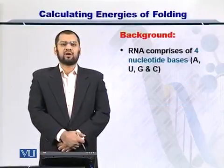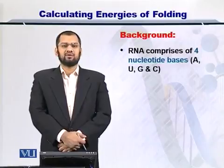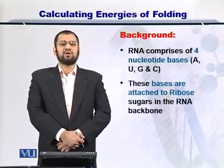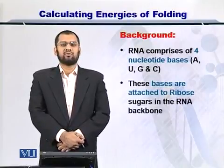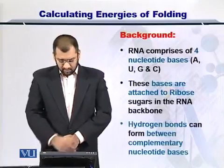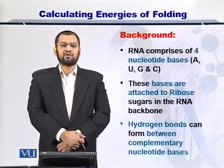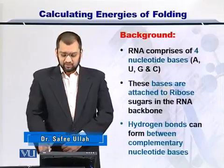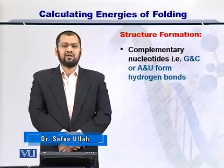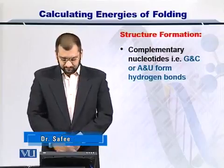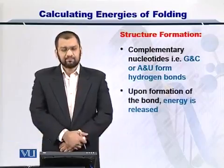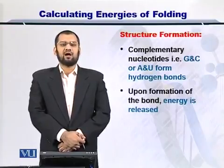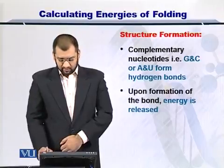As you know, RNA is comprised of four nucleotides A, U, G and C, and they are attached to the ribose sugars in the backbone of the RNA molecule. Hydrogen bonds can form between the complementary nucleotides. The nucleotides that bond together are G and C, and A and U. As a result, energy is given out after the bond is formed and the RNA molecule becomes more stable.